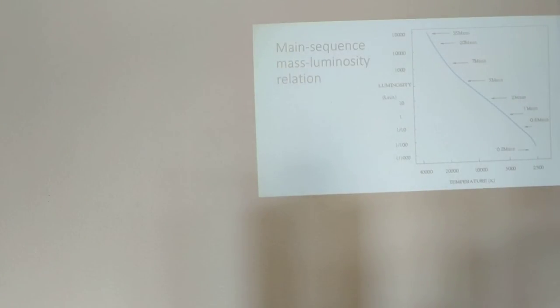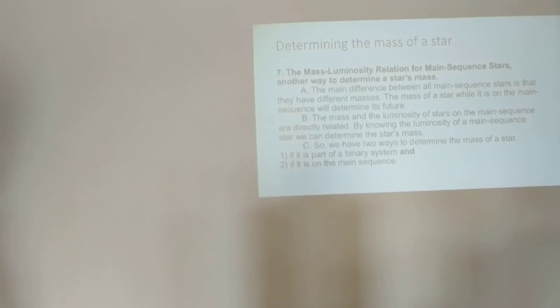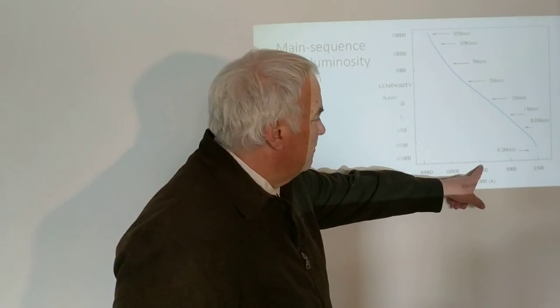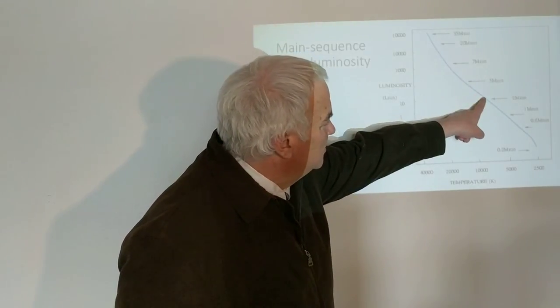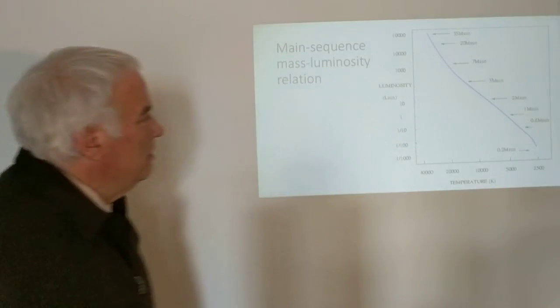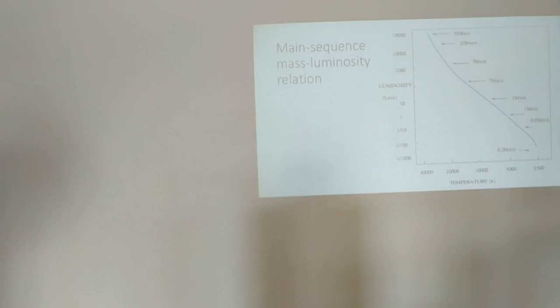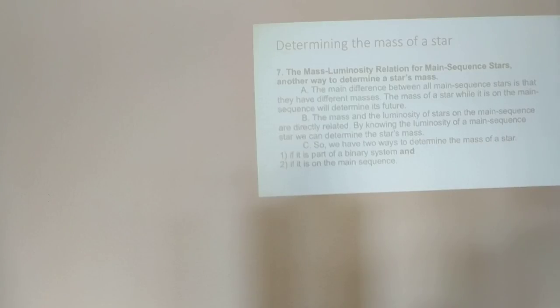Determining the mass of a star: we have two methods. The first direct method is using the binary star orbit and Kepler's laws to determine the mass. That only works if the star is in a binary system. If the star is on the main sequence, we can use the main sequence mass-luminosity relation by just finding where it is in the main sequence. For instance, if its temperature is 10,000 degrees, then its mass will be between two and three solar masses.